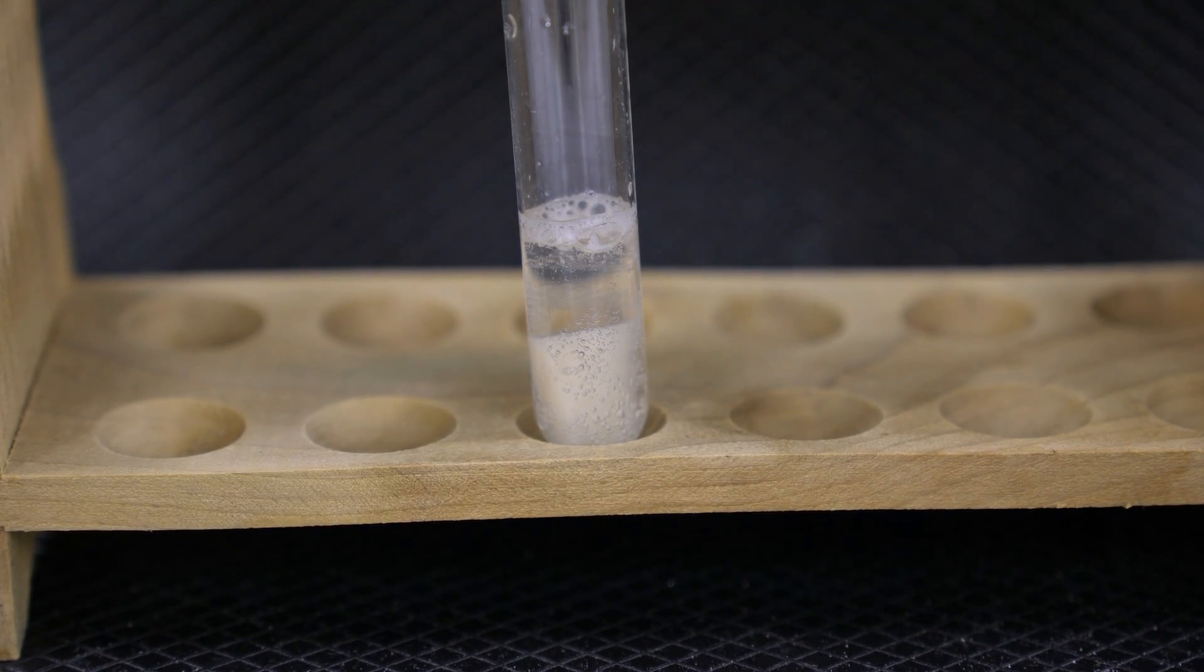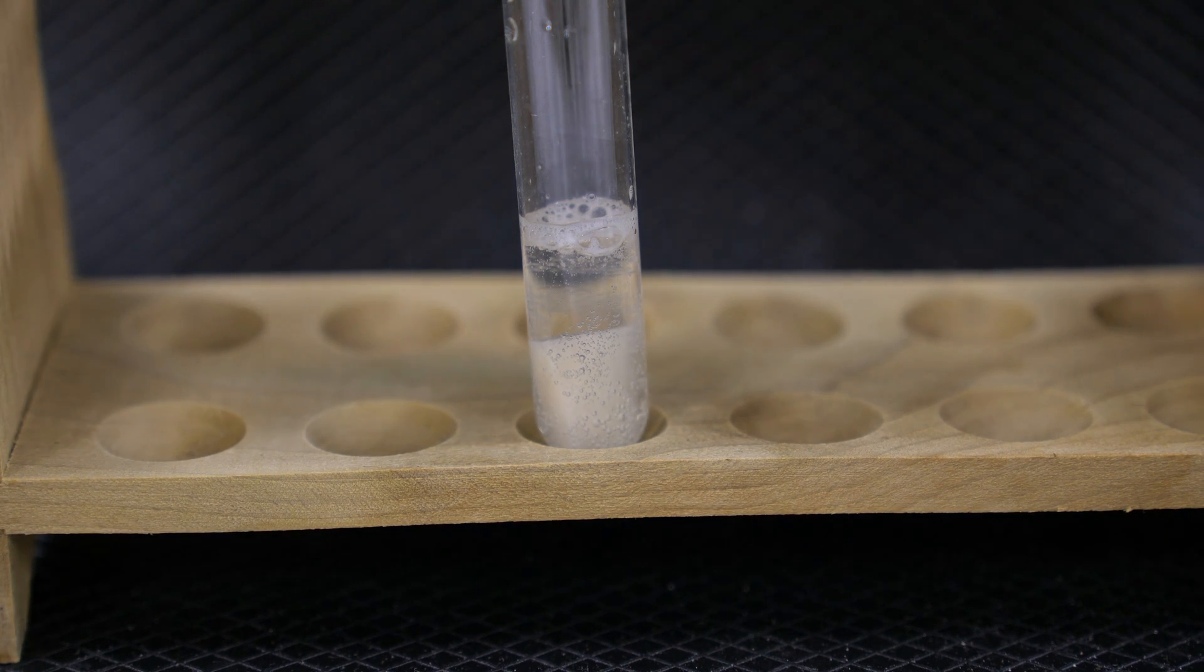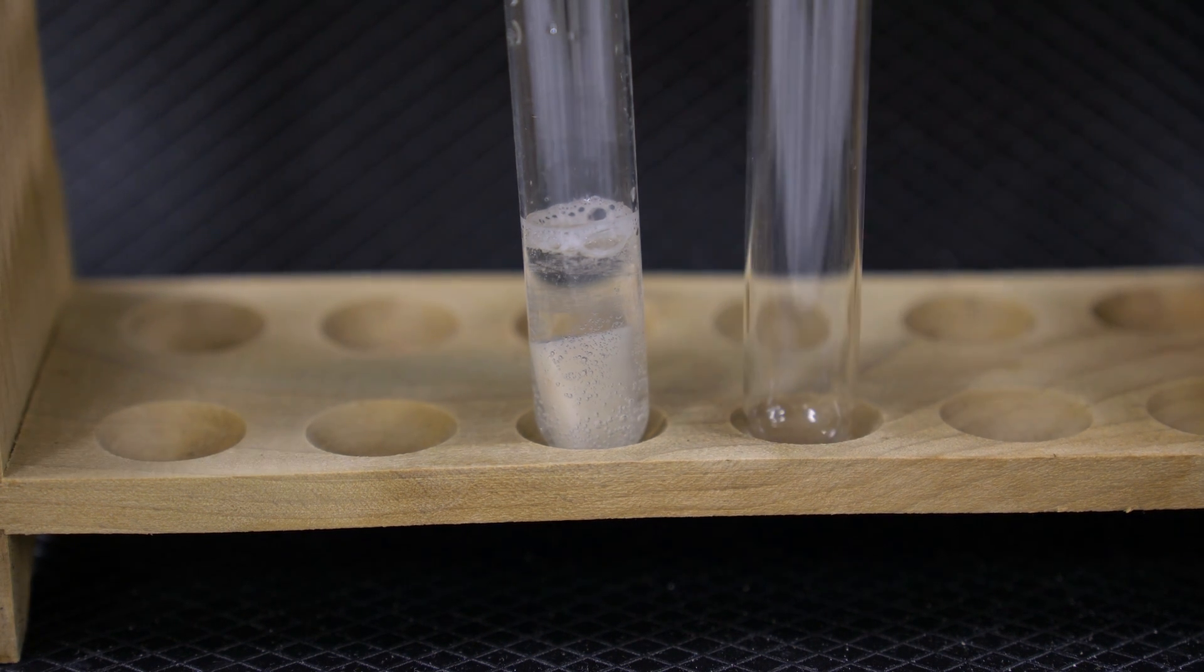So here we are back at our first reaction. We're noticing it's still reacting a little bit, but it's definitely slowed down. We're going to progress with this portion of the lab now. Reading the lab instructions, we're instructed to take the liquid from test tube 1 and put it into a second test tube.